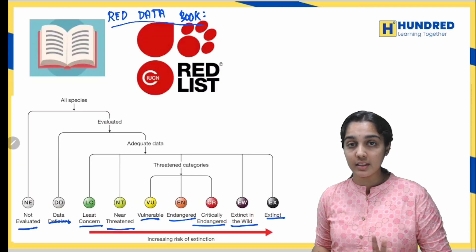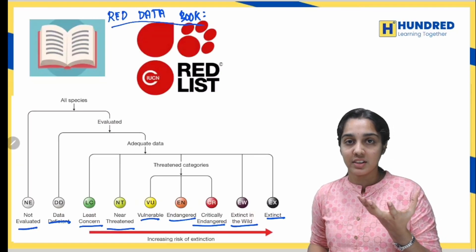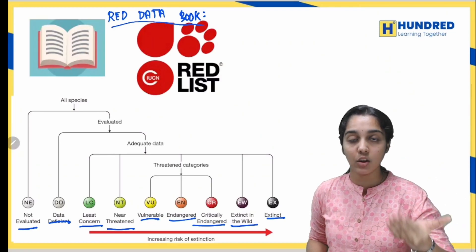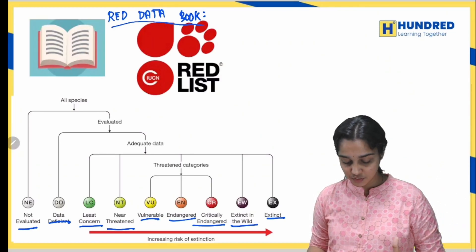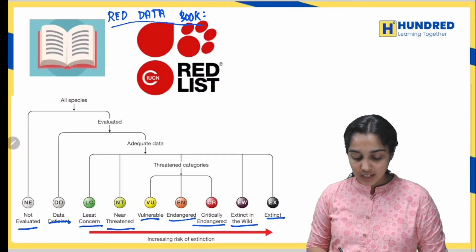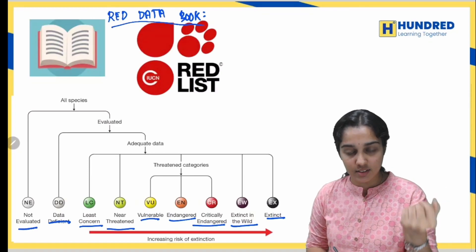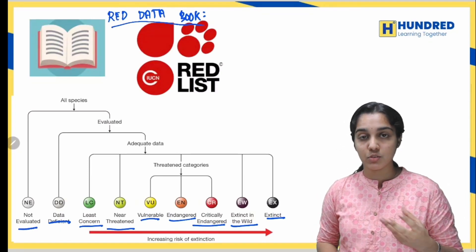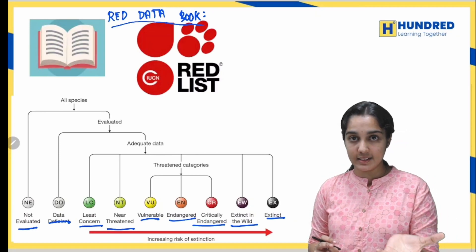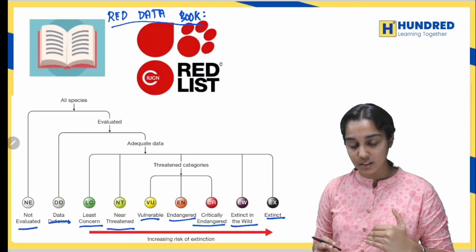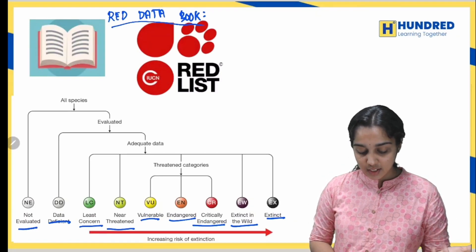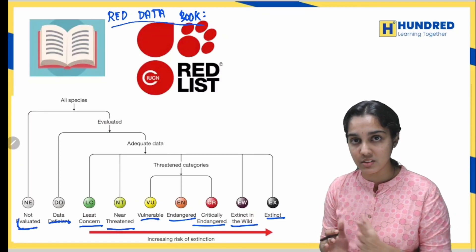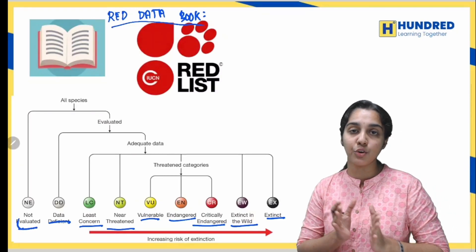The classification goes from higher risk to lower risk species. Least Concern falls under lower risk species, then Data Deficient species come under data deficient category, and species not yet studied come under Not Evaluated.